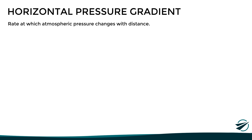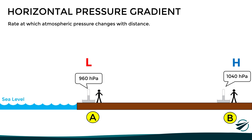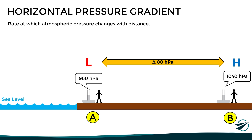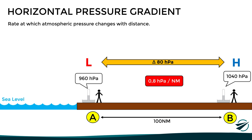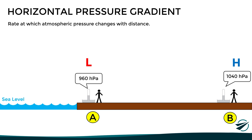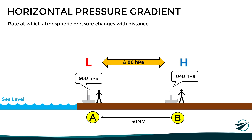For example, if point A has a pressure of 960 and point B a pressure of 1040, the pressure difference is 80 hectopascals. If the distance between them is 100 nautical miles, we can determine the horizontal pressure gradient by dividing 80 by 100, obtaining a gradient of 0.8 hectopascals per nautical mile. If the distance were only 50 nautical miles, the horizontal pressure gradient would be twice as high — 1.6 hectopascals per nautical mile — meaning the pressure changes more rapidly with distance.